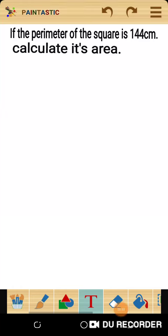If the perimeter of the square is 144 centimeters, calculate its area. To calculate area, I need to use the formula A equals L squared.